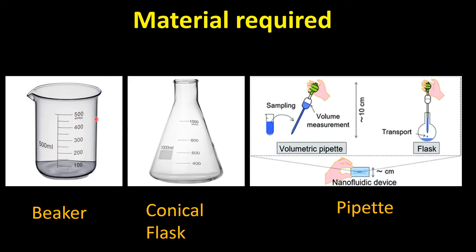First of all, the beaker — it is shaped like a cylinder with a wide opening. Similarly, this is the conical flask. The difference between the conical flask and the beaker is that the beaker's mouth or opening is wide, whereas the conical flask's opening is narrow, and the conical flask is elongated.